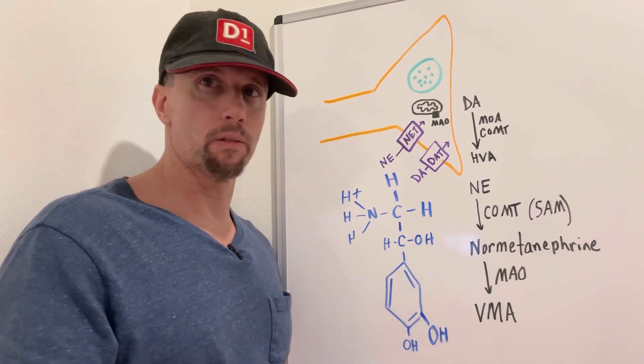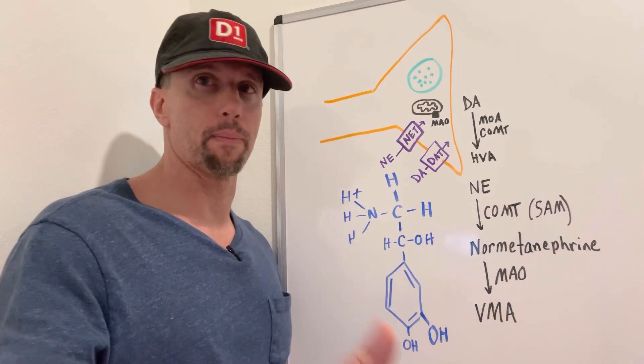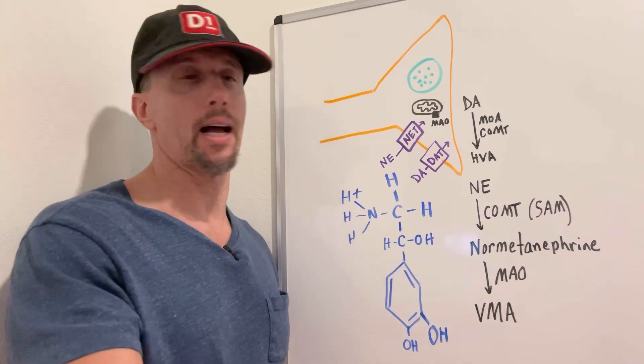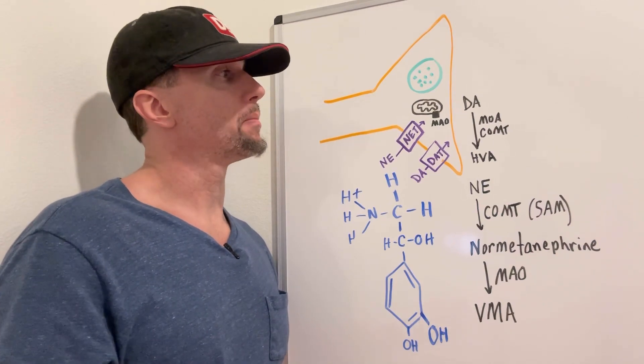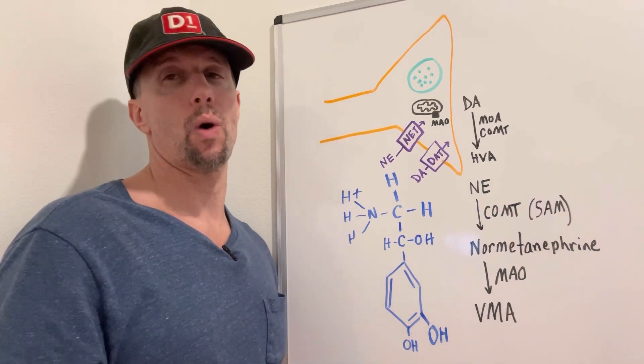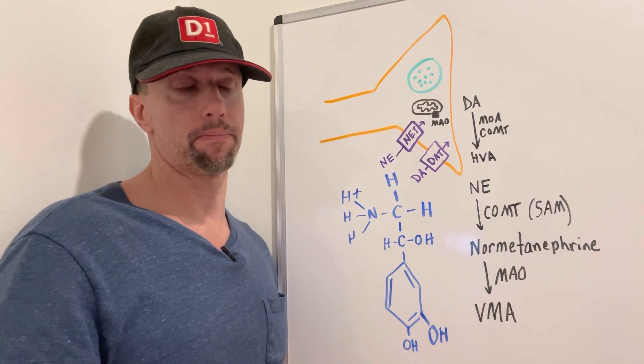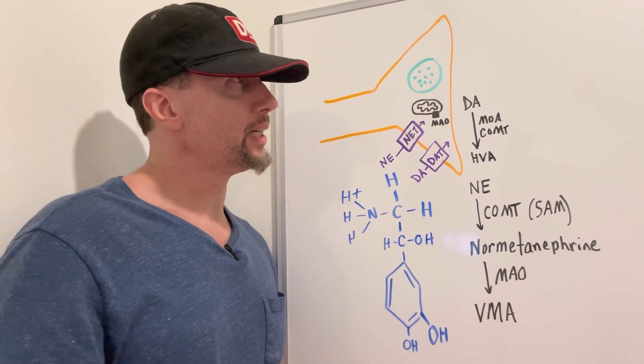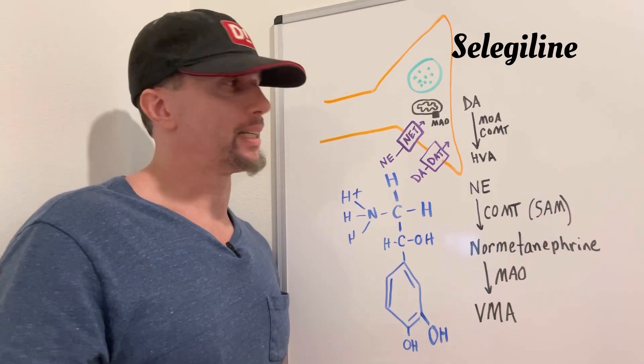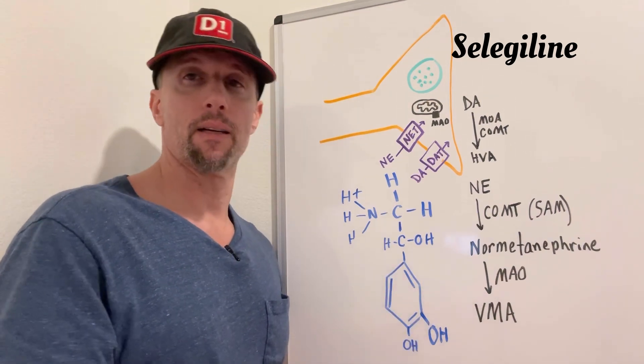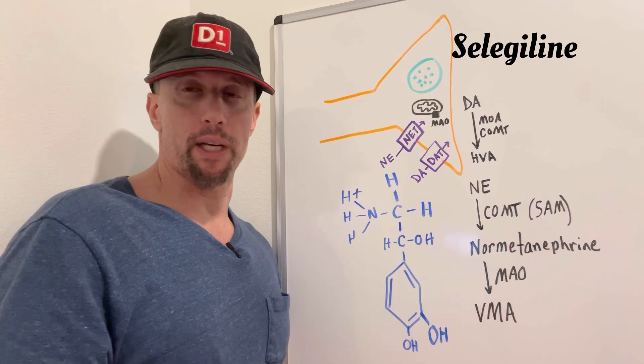but sometimes they still, if people don't respond to those, they may work their way down to like a third line, which is a monoamine oxidase inhibitor that's used quite often with Parkinson's disease and it's called selegiline. And basically it can just increase the amount of dopamine present for the basal ganglia.